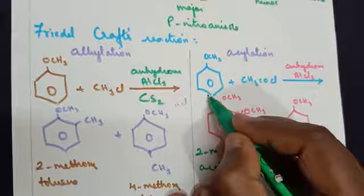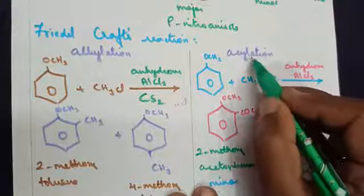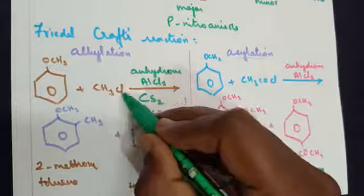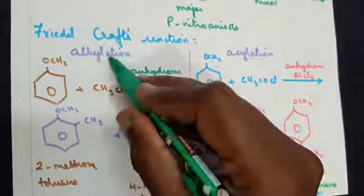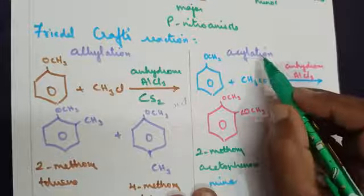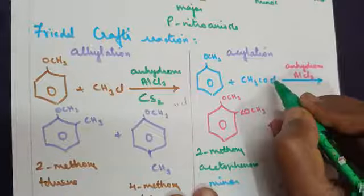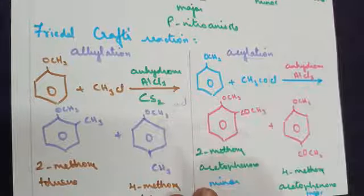On the other side, anisole acylation. Acylation is treating it with an acetyl chloride. Alkyl chloride, CH3Cl, is called alkylation. Acylation uses CH3COCl. Now, here again, HCl—the bond cleavage takes place.